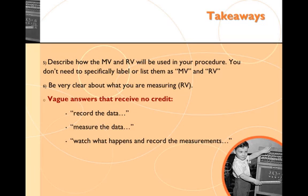Additional takeaways include describing how the manipulated variable and the responding variable will be used in your procedure. So you don't need to specifically label or list them as long as you describe them in proper use. Please be very clear about what you're measuring. So bubble data is not necessarily specific, but measuring the time for the bubbling to stop, that's very specific. So vague answers that receive no credit: record the data. That begs the question, well, what data are you measuring? So you should be specific.